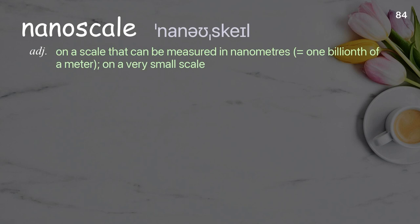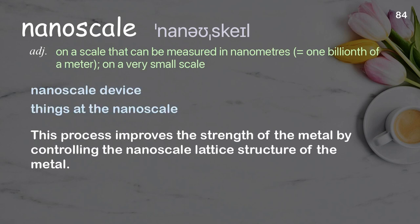Nanoscale: on a scale that can be measured in nanometers, which equals one billionth of a meter; on a very small scale. Examples: nanoscale device, things at the nanoscale. This process improves the strength of the metal by controlling the nanoscale lattice structure of the metal.